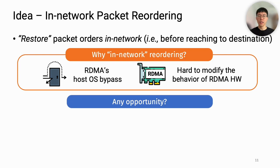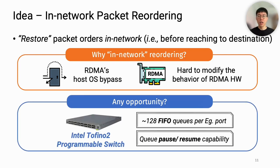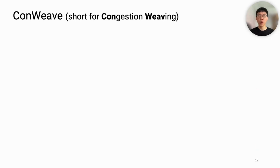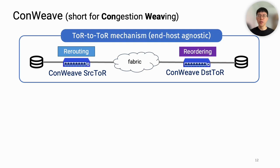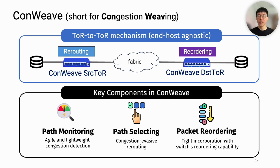Then, where can we reorder packets? We find the opportunity from features of the recent programmable switch Intel Tofino 2, which allows storing packets in the network with multiple FIFO queues and packet recirculation capabilities. From this opportunity, we propose Convive, a network load balancer for RDMA. Convive runs on ToR switches, so it is host OS agnostic. At a high level, it makes rerouting at the source ToR and reorders packets at the destination ToR. Convive has three key components: path monitoring, path selection, and packet reordering for fine-grained rerouting and in-order packet delivery.